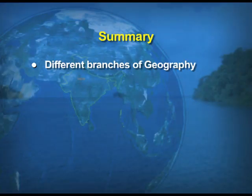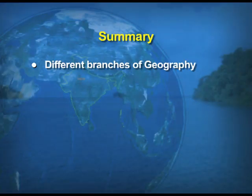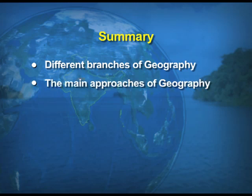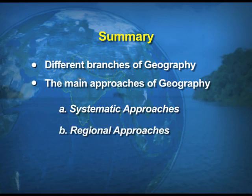The most important thing is the field survey methods we use in geography. As far as techniques are concerned, we have GPS and remote sensing techniques which help us to analyze geographical phenomena. To sum up, what we have studied today are the different branches of geography, which depend on the approaches we use. The main approaches are systematic and regional, and on the basis of these, different branches of geography have been enumerated.